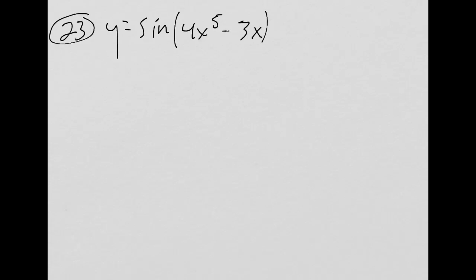23 is actually sort of similar to 21 in that it's chain rule. When I take the derivative of the innards, it's not just one piece. So the key here with doing this right is making sure that you get both pieces and that you put them in parentheses.